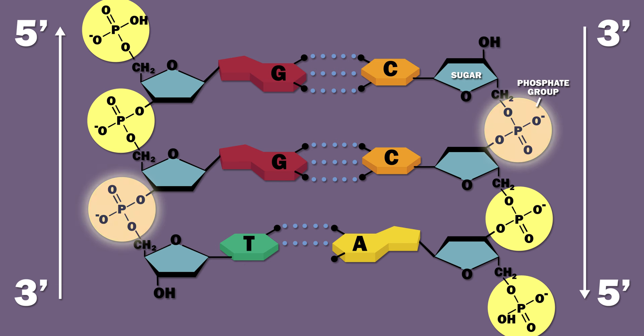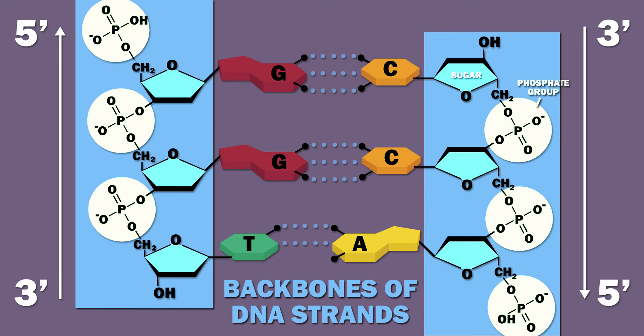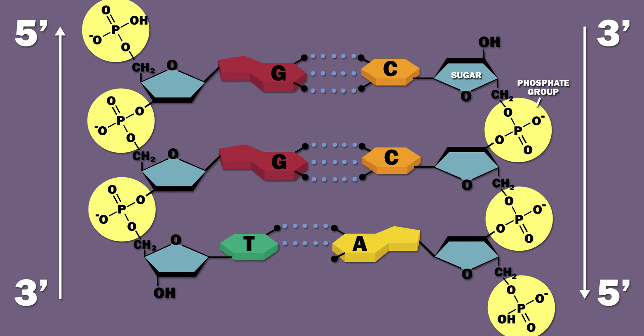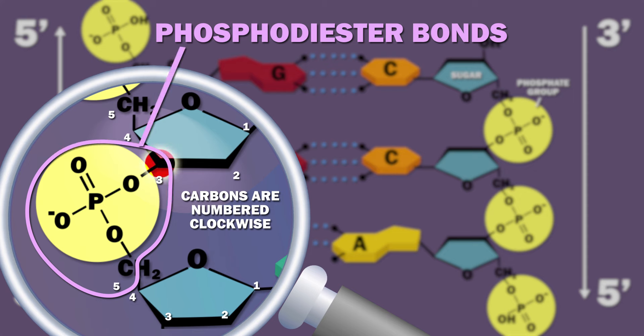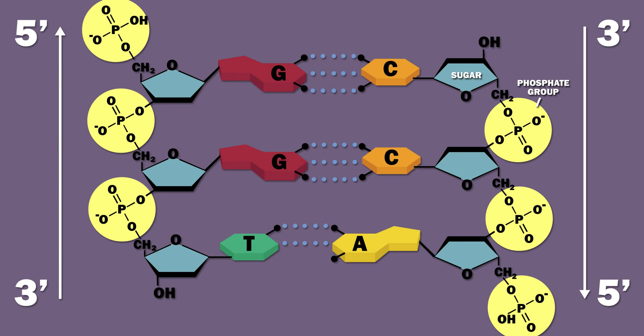The sugar and phosphate groups alternate to form DNA's backbone. The phosphates act like connectors between the sugars by forming phosphodiester bonds between the third carbon atom of one sugar ring and the fifth carbon atom of the next sugar ring. These special carbon atoms are termed the 3' and 5' carbons.